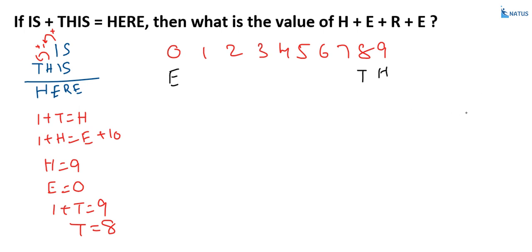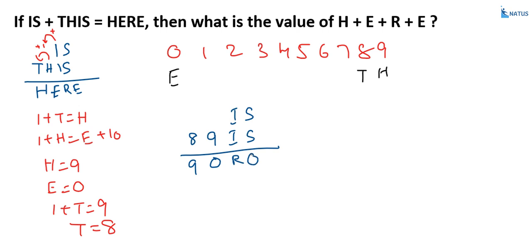Now substituting these values into the equation: IS plus THIS, with H equal to nine and T equal to eight, gives the sum where H equals nine, E equals zero, and R and the last digit is zero. Looking at the first column, S plus S equals zero — this means 2S equals ten, with one carry over. So S is equal to five.